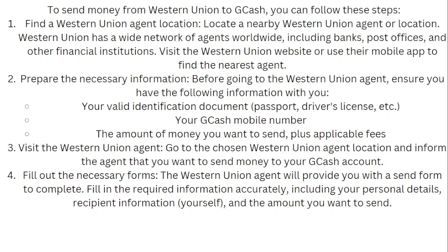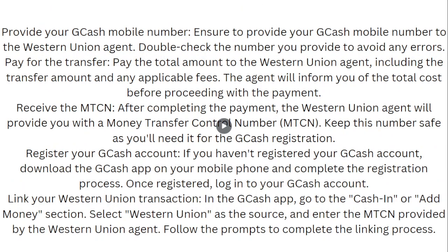Go to the chosen Western Union agent location and inform the agent that you want to send money to your GCash account. The Western Union agent will provide you with a send form to complete. Fill in the required information accurately, including your personal details, recipient information, and the amount you want to send.